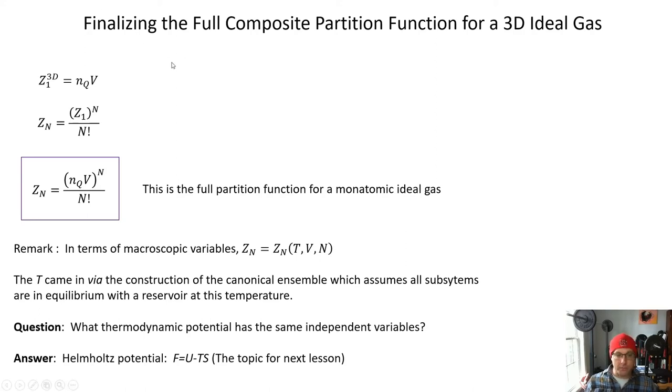And so I'll give you a little preview of what we're going to do. If you look at this carefully in terms of the macroscopic variables that appear, so write out the quantum concentration in terms of its variables, you'll note that the composite partition function here is a function of temperature, volume, and particle number. So remember, the T has come in by assuming and constructing the canonical ensemble to have subsystems in thermal equilibrium with a reservoir at this temperature.